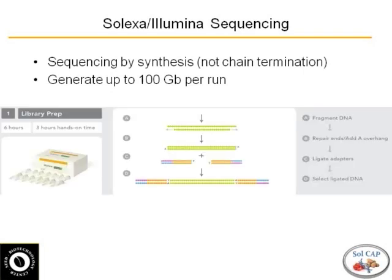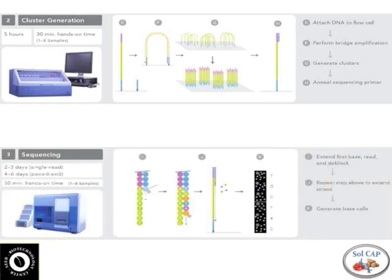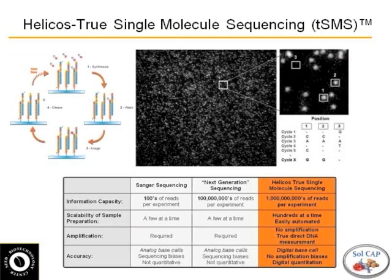Another technology came out around the same time from a company called Solexa, brought out by Illumina — a slightly different technology called sequencing by synthesis. They start with essentially the same method: shear the DNA into pieces, add adapters, go through PCR amplification to get loops which are then linearized. Instead of looking at things one base at a time, they add all the bases at once but each base has a different fluorescent tag on it. Based on the color of that tag, you can tell what base was added at each cycle. The more cycles you do, the longer your sequence, within certain limitations.